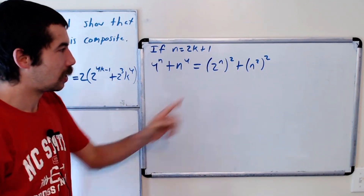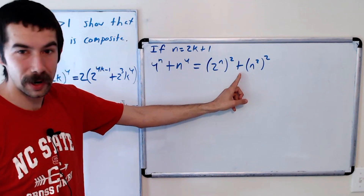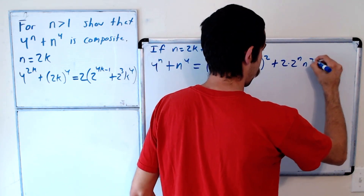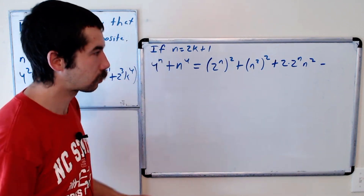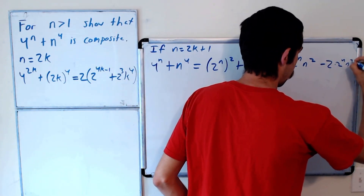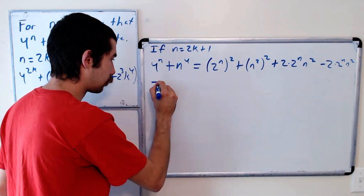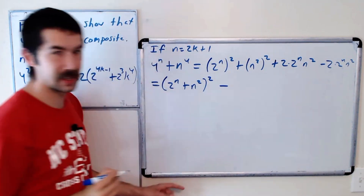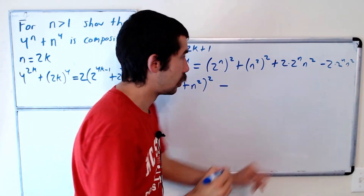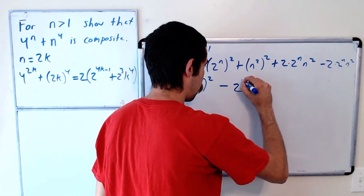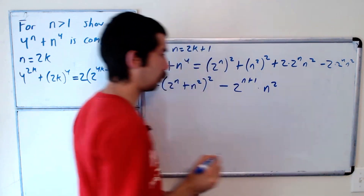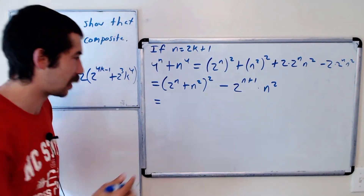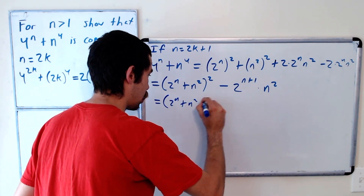If we want to make this a perfect square, this is like x squared plus y squared, and we're going to need a 2xy term in the middle. Then we subtract off that same term. So this becomes 2 to the n plus n squared, all squared, minus 2 to the n plus 1 times n squared.